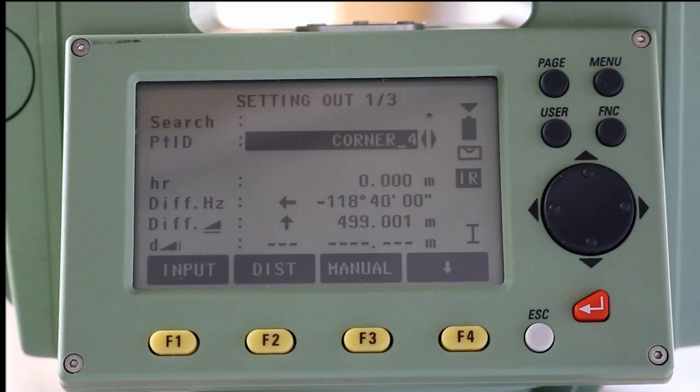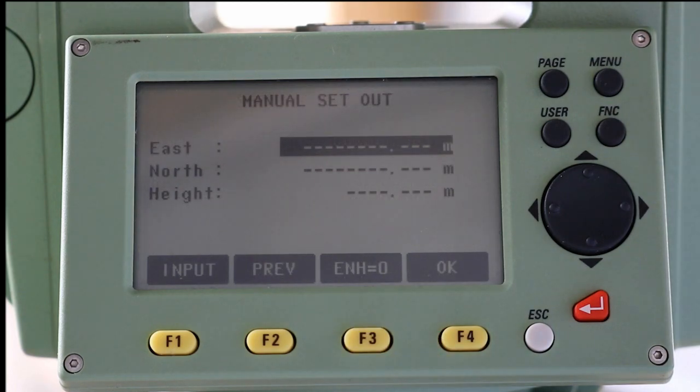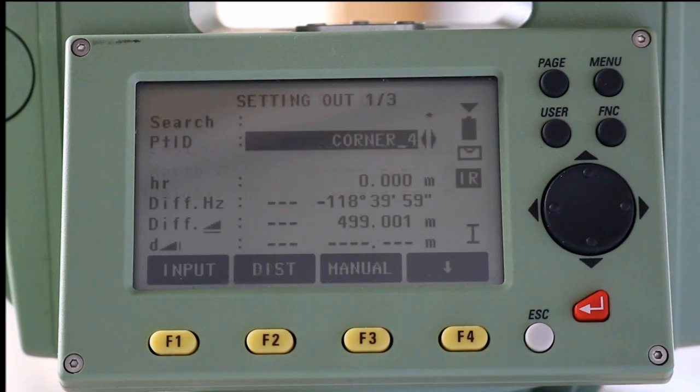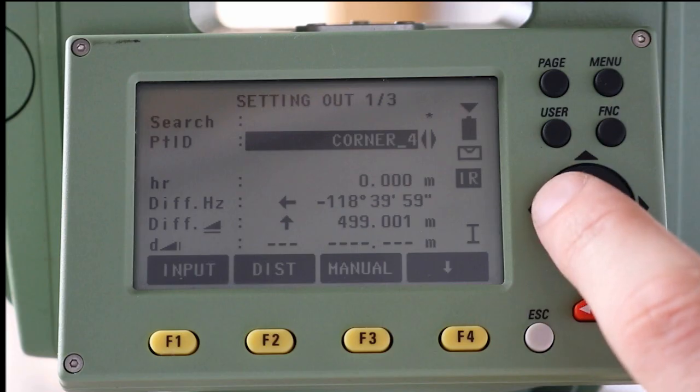There are two ways of selecting the coordinates that you wish to set out. The first is manually by pressing F3, where you enter the easting, northing, and height. The second method is by having the points already saved. As you can see near the top of the screen, I have saved points called corner 1 to 4.